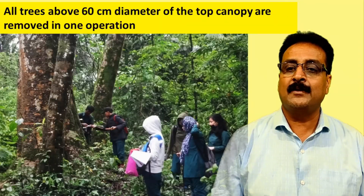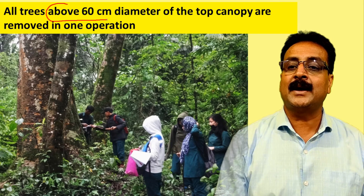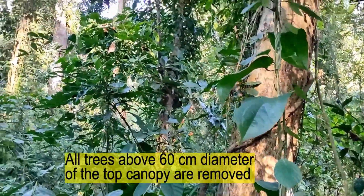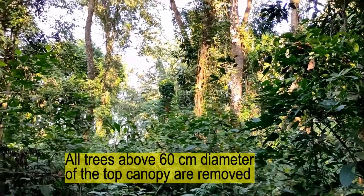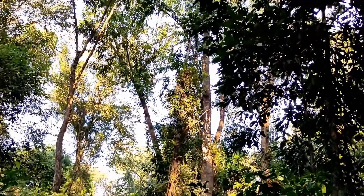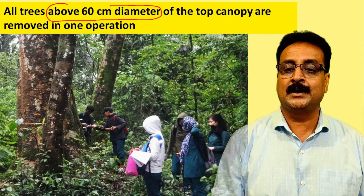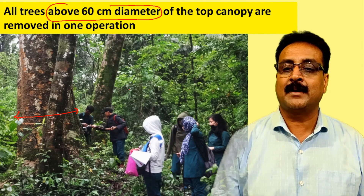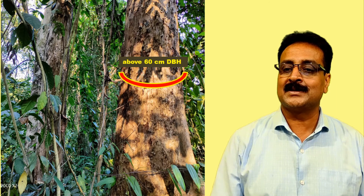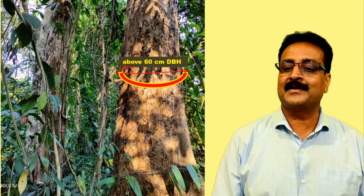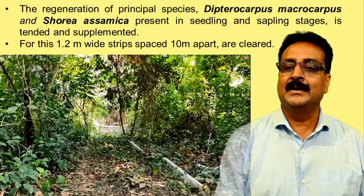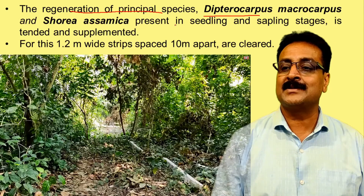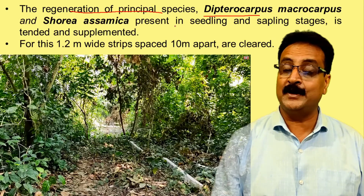In the tropical rainforest, we fell trees of 60 centimeter diameter and above from the top canopy. Under this system, all trees above 60 centimeter DBH or 189 centimeter GBH of the top canopy are removed in one operation. The principal regeneration species are Dipterocarpus macrocarpus and Shorea assamica. We look for existing seedlings and saplings to tend; if absent, we carry out supplementary operations.